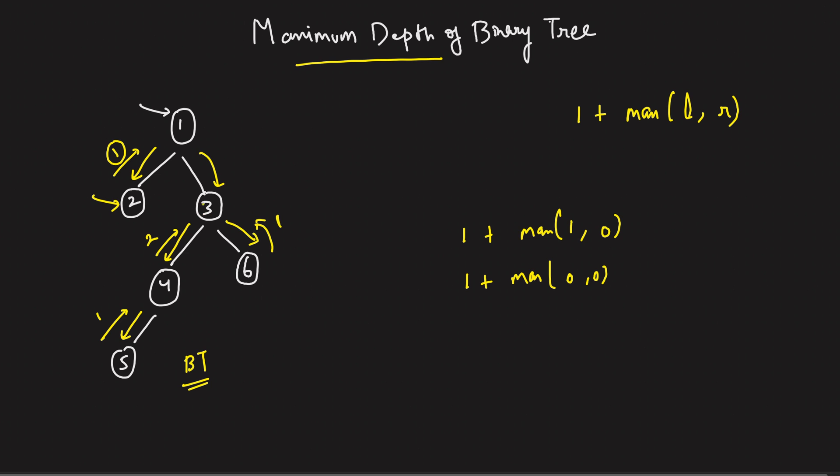Now, when I am at node 3, can I say for node 3, the answer will be 1 plus max of, now the left has been computed, that's 2, and the right has been computed, that's 1. So can I say 1 plus max of this, that's 1 plus 2, 3.